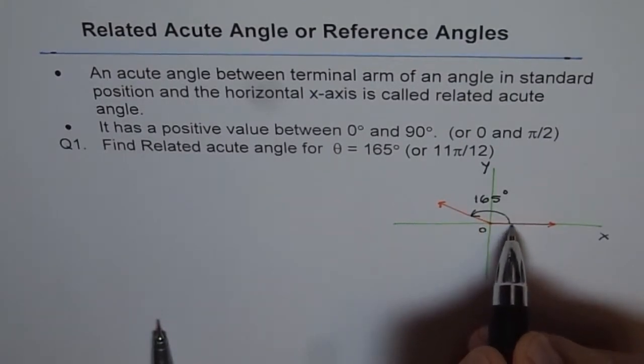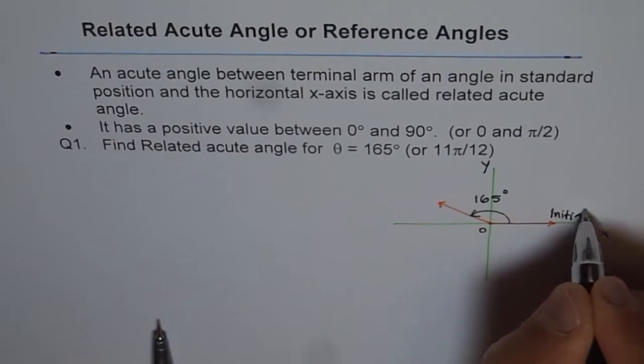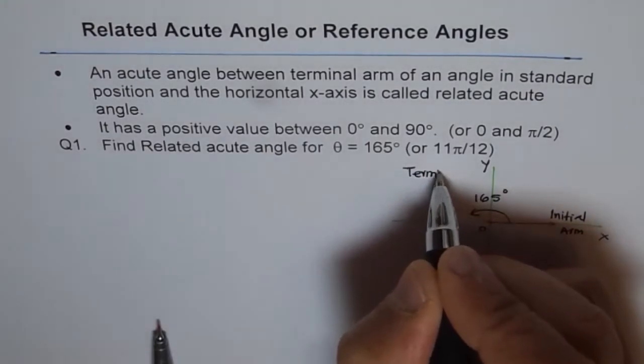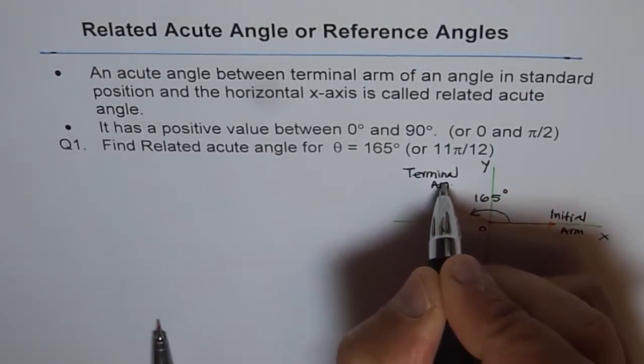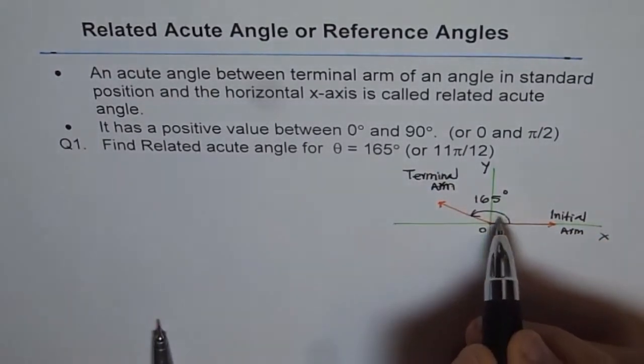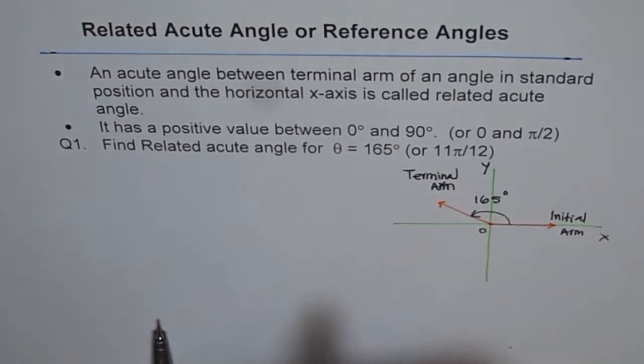So this angle from initial arm to terminal arm, this is initial arm. And that one is the terminal arm. So the angle between initial arm and the terminal arm is this angle θ, which we call principal angle.